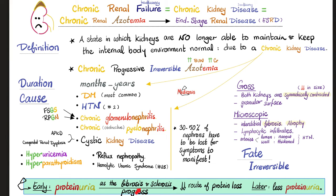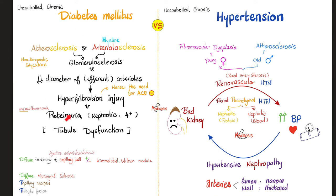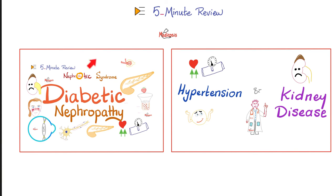As chronic kidney disease gets worse, fibrosis and sclerosis worsen, leaving less space for proteins to leak — so actually proteinuria gets better. Diabetes is the number one most common cause of chronic kidney disease. Hypertension can ruin the kidney, and a bad kidney can raise blood pressure. To learn more about how diabetes and hypertension affect the kidney, check out the separate videos in the 5-minute review playlist and the nephrology playlist.